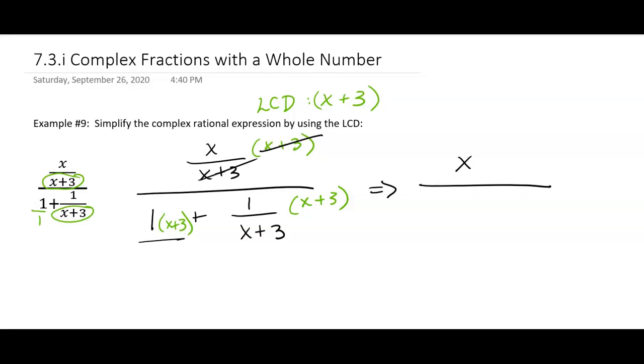And then over here, we're going to have 1 times x plus 3. And then on the other part, those x plus 3s are going to cancel, so we'll have plus 1. And that 1 is right there.